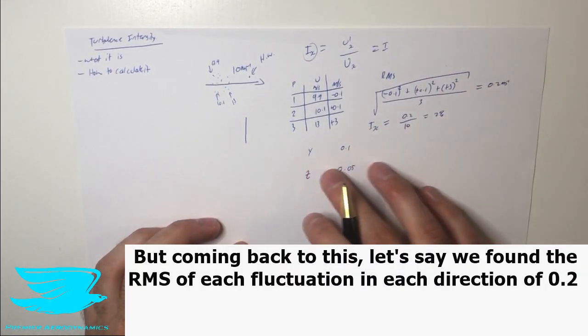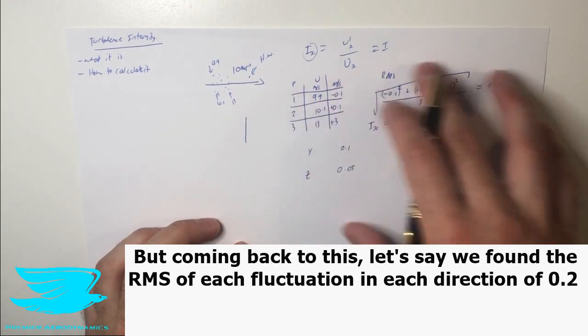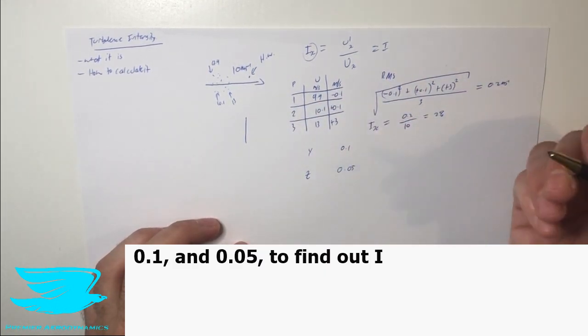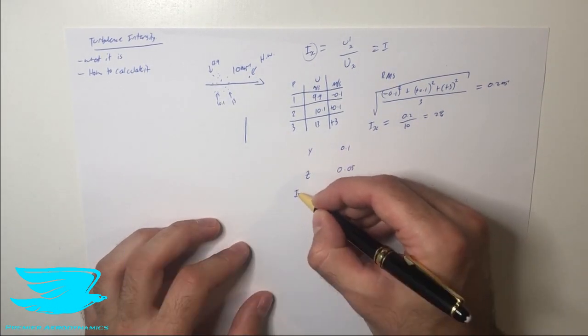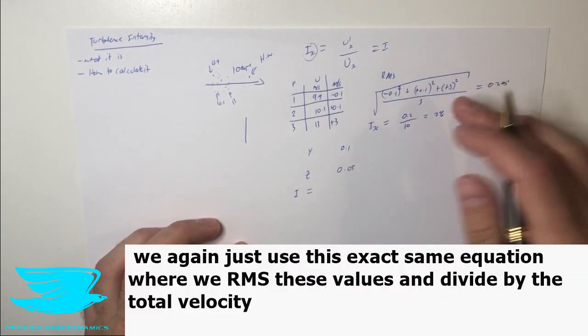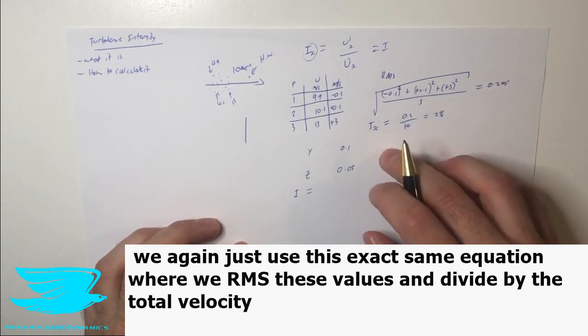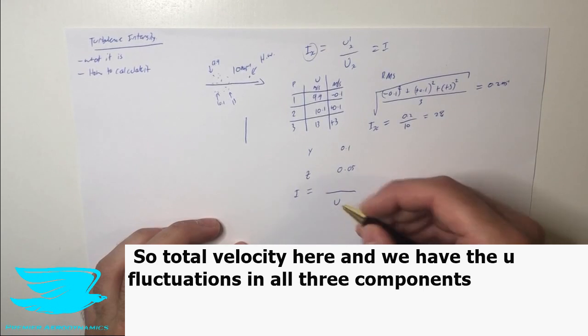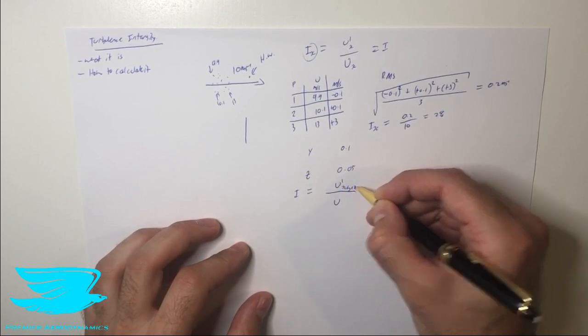But coming back to this, let's say we found the RMS of each fluctuation in each direction of 0.2, 0.1, and 0.05. To find out I turbulence intensity in total, we again just use this exact same equation, where we RMS these values and divide it by the total velocity. So total velocity here, and we have the U fluctuations in all three components, so X, Y, Z, that we're going to figure out now.